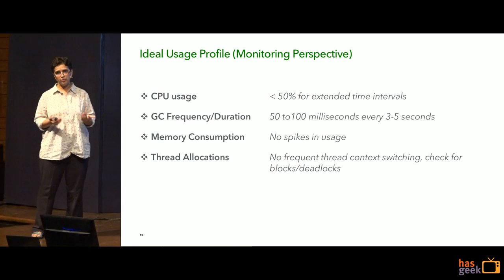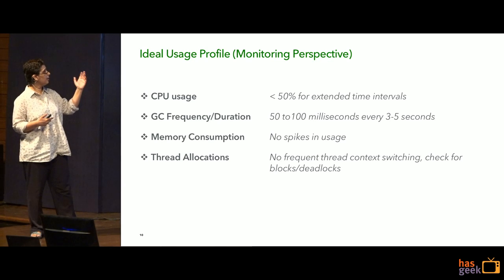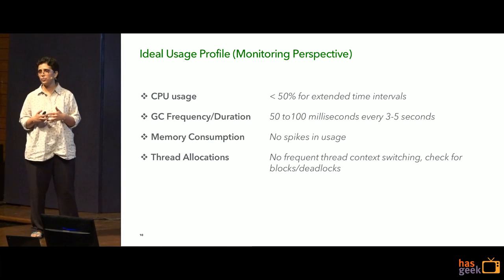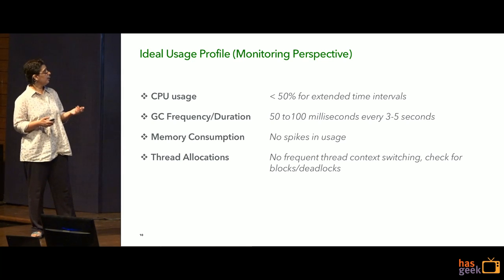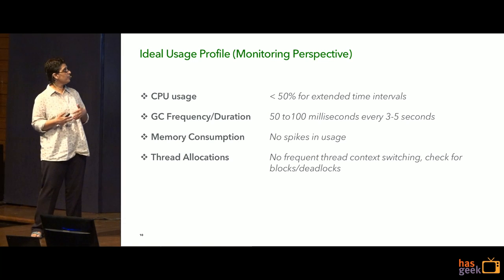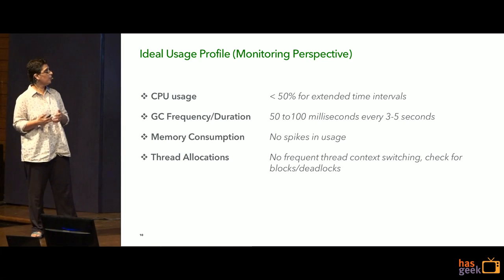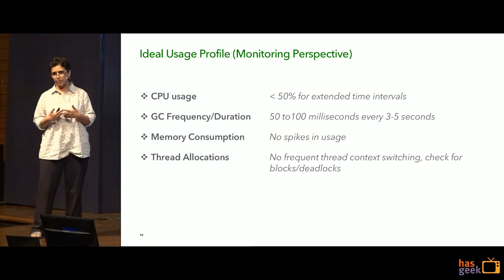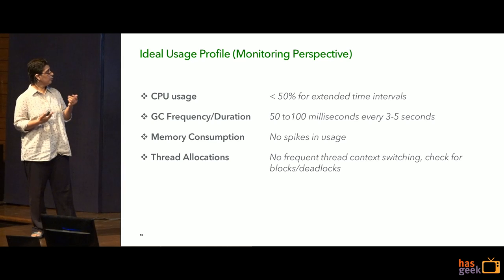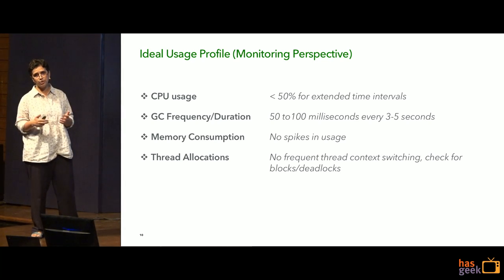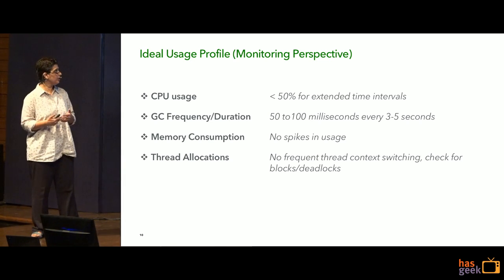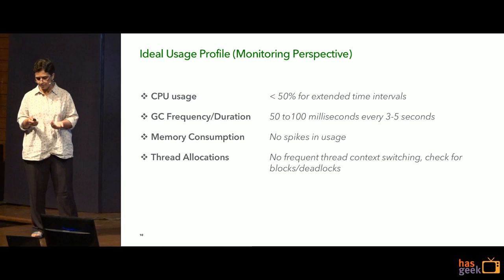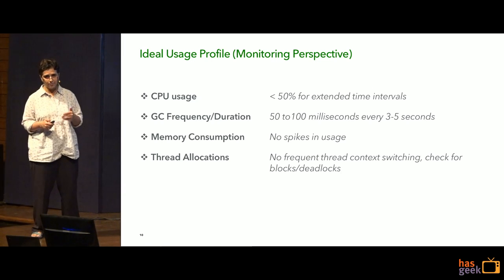From a monitoring perspective, some of the key things to watch are CPU usage — are you seeing CPU usage exceeding 50% for extended time intervals? Similarly, your garbage collection frequency as well as the duration of your GC: you want a GC cycle to run every 3 to 5 seconds and you don't want it to take more than 50 to 100 milliseconds. You also need to keep an eye out for memory consumption — are there any spikes in usage? And thread allocations: is there too frequent context switching between your threads? Are there any deadlocks or blocks in place?